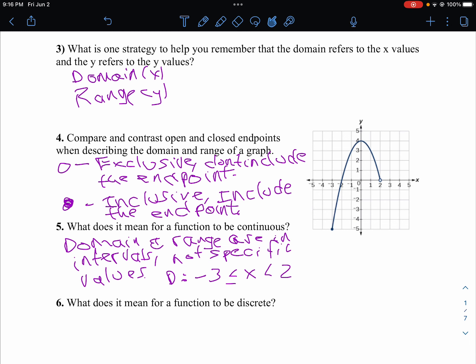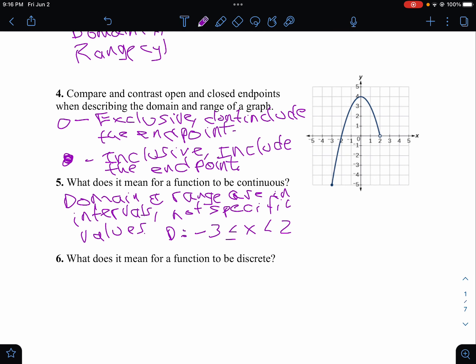Whereas the opposite is for a discrete function, your domain and range are going to be specific values.